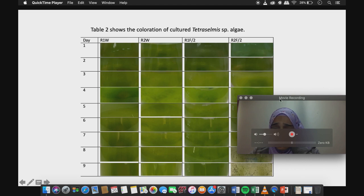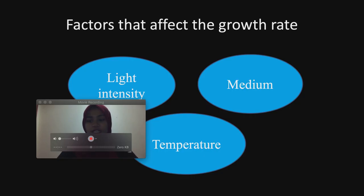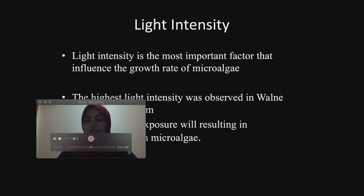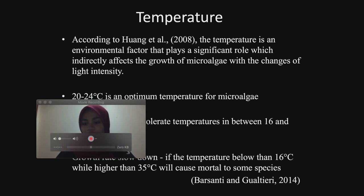The color intensity of each medium was also compared. The growth rate of microalgae is usually affected by environmental factors such as light intensity, medium, and temperature. Light intensity is the most important factor influencing the growth rate of microalgae. The highest light intensity was observed in Walna R2, which caused the maximum cell density. Less light exposure will affect the growth rate, while too much light will result in photoinhibition. Temperature also plays a significant role; the highest recorded temperature was 32.7 degrees Celsius and the lowest was 29.7 degrees Celsius.